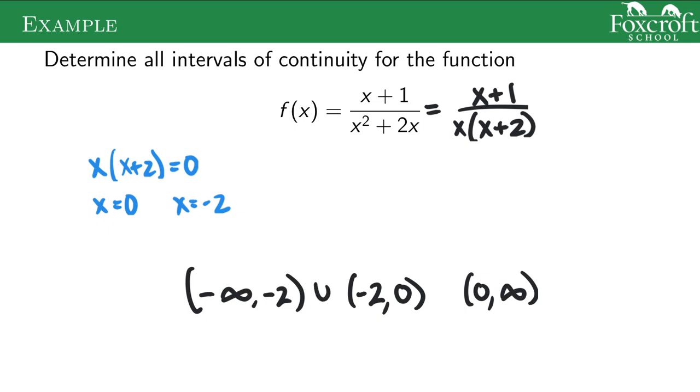And again, you can put these little union symbols that can make it one big interval. But those are the three distinct places. If you were to graph this, it would look something like that or something similar. So you kind of have these two asymptotes, but everything else works outside of that. So you just take those two asymptotes out of your interval and you get all the intervals where this function is continuous.